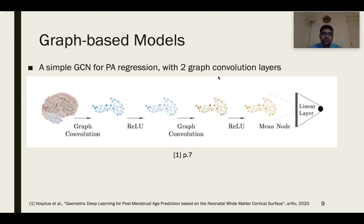Here is a simple GCN architecture proposed by Vasilis et al., which consists of two graph convolution layers, as well as ReLU activation, and a final fully connected layer that outputs the scan age prediction.